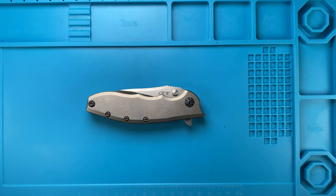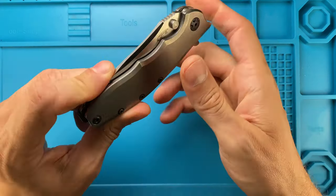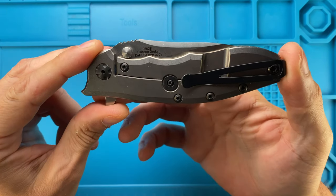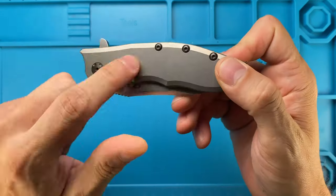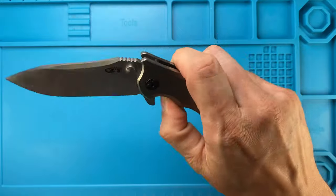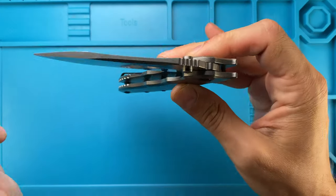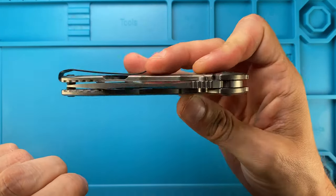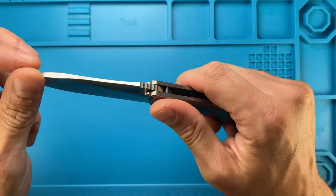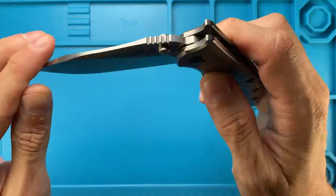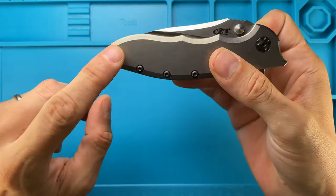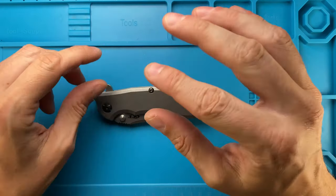Alright ladies and gentlemen, Fabs in the house and today I've got the Zero Tolerance 0562Ti with titanium scales. This knife has a pretty nice action, but you see you need to wiggle it in order for the blade to just fall shut. So let's try to see if we can perfect the action a little bit more.